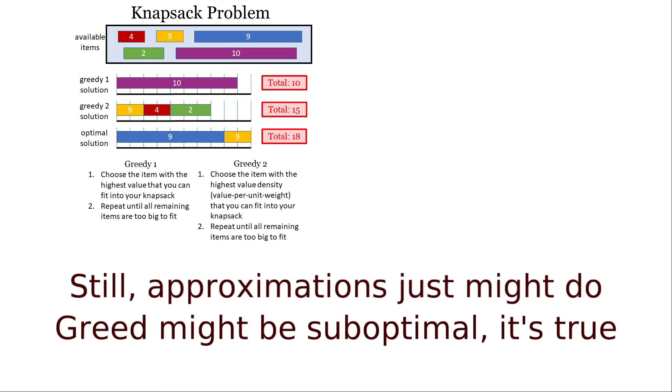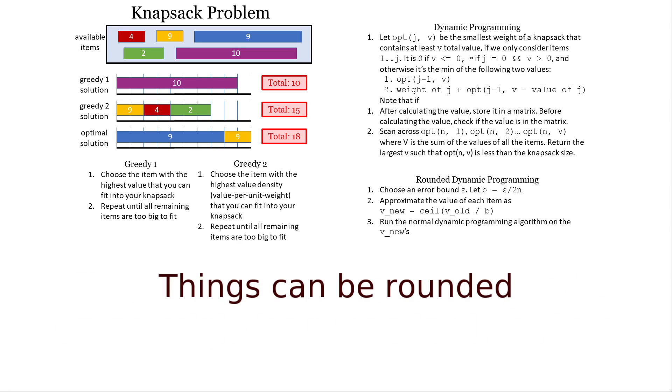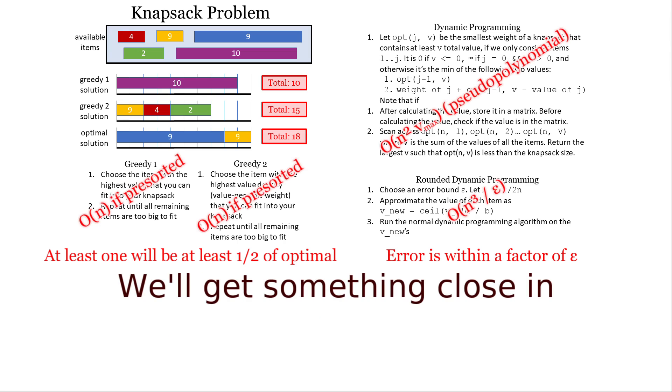Greed might be suboptimal, it's true. Things can be rounded, but as long as the error's bounded, we'll get something close in polynomial time.